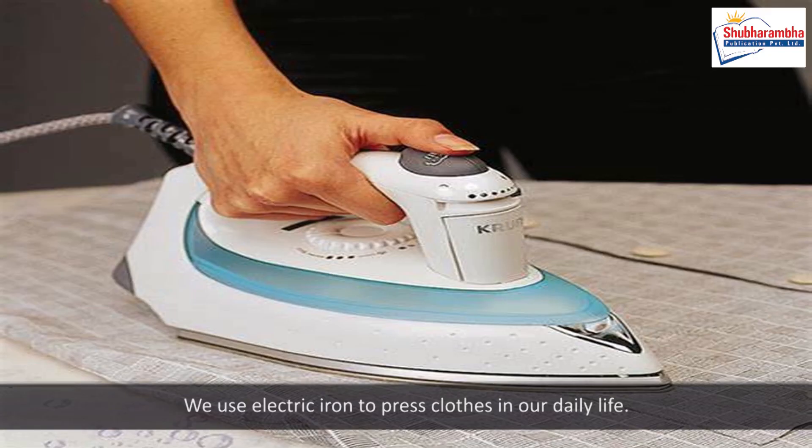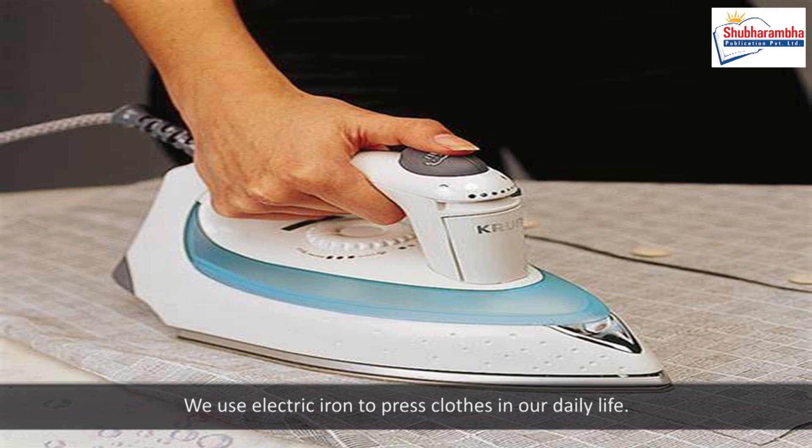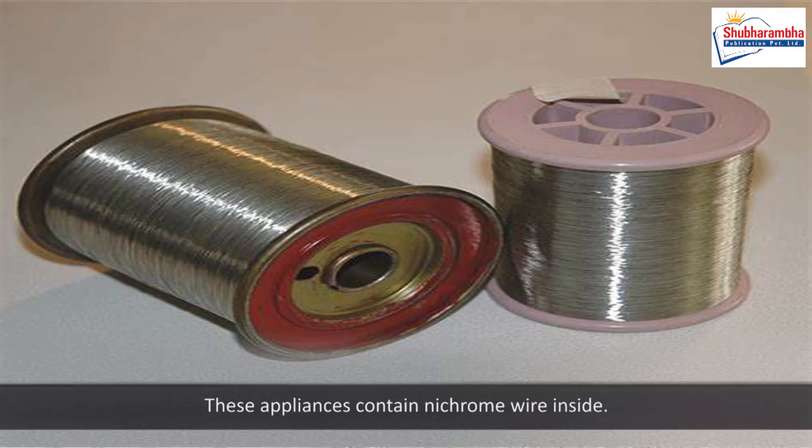We use electric iron to press clothes in our daily life. Electric heater is used to cook food and warm up the room. These appliances contain chrome wire inside.